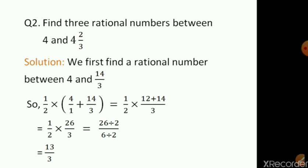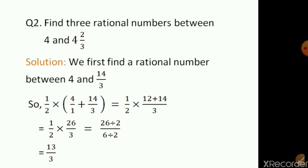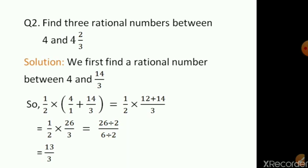That is equal to 1 by 2 into — the LCM of 1 and 3 is 3. To convert 4 by 1 into equivalent term we multiply it with 3, giving us 12. 14 by 3 is already in equivalent form, so we write 14. Adding 12 and 14 we get 26 upon 3. So in the next step we have 1 by 2 into 26 upon 3. 1 multiplied with 26 is 26, and 2 multiplied with 3 is 6. There is a common divisor of 26 and 6, which is 2. Dividing both numerator and denominator by 2 we get 13 upon 3. That is the first rational number.